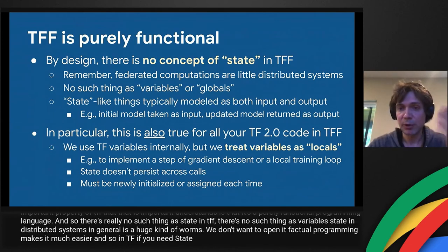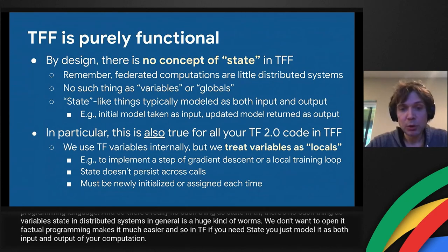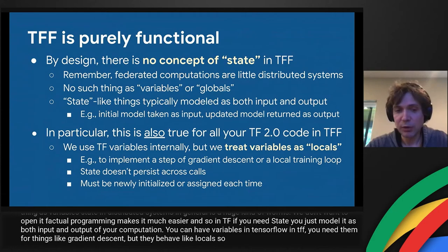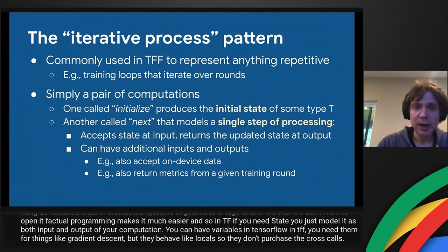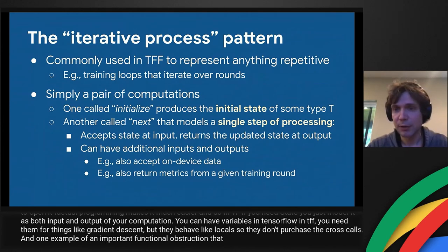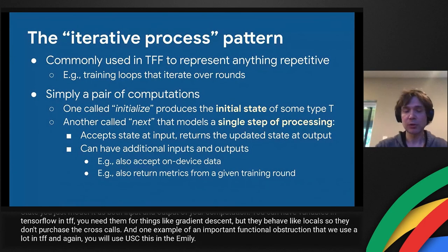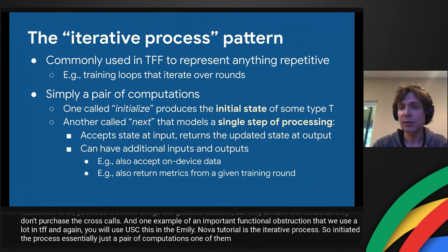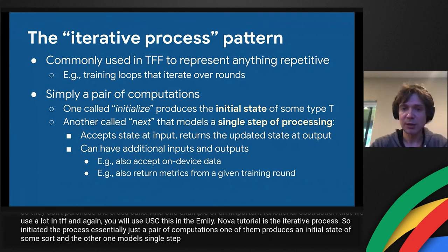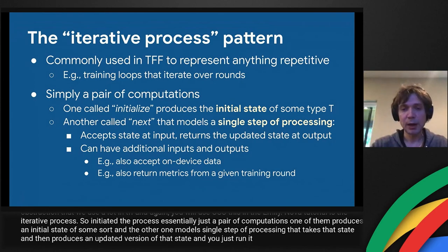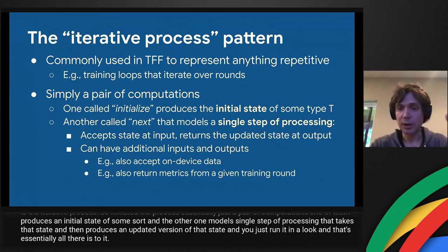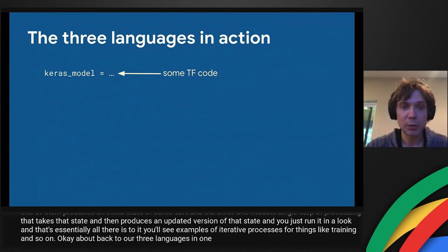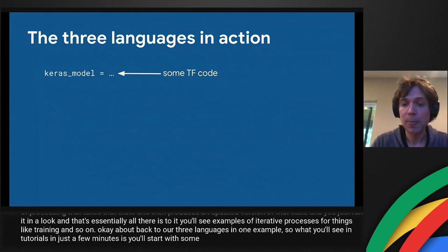An important functional abstraction in TFF is the iterative process — a pair of computations. One produces an initial state, and the other models a single processing step that takes that state and produces an updated version, which you run in a loop. When going through tutorials, you'll see code in three languages mixed together: TensorFlow for the model, TFF language for federated learning algorithms, and Python for simulation logic like randomly selecting clients each round.